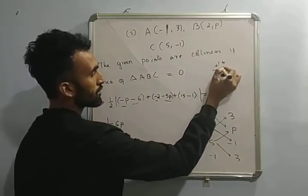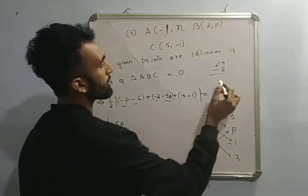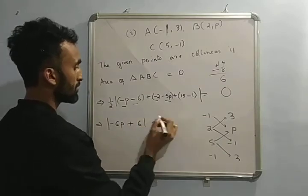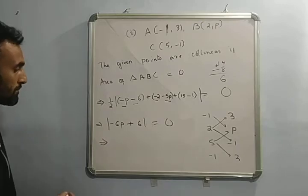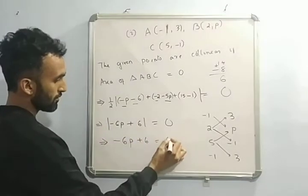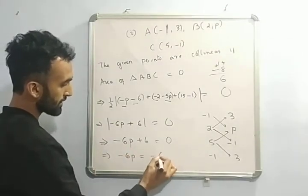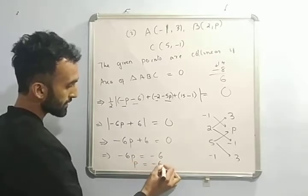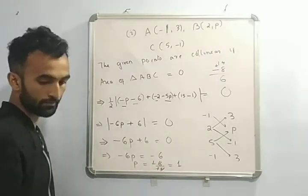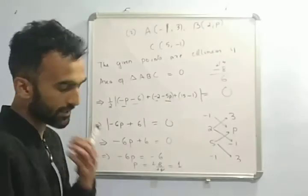14 minus 8 comes to 6, positive 6. So minus 6P plus 6 equals to 0. Remove the modular sign — not required. Which implies minus 6P equals to minus 6, and P equals to minus 6 by minus 6, which is equal to 1. So P equals 1 is the answer.